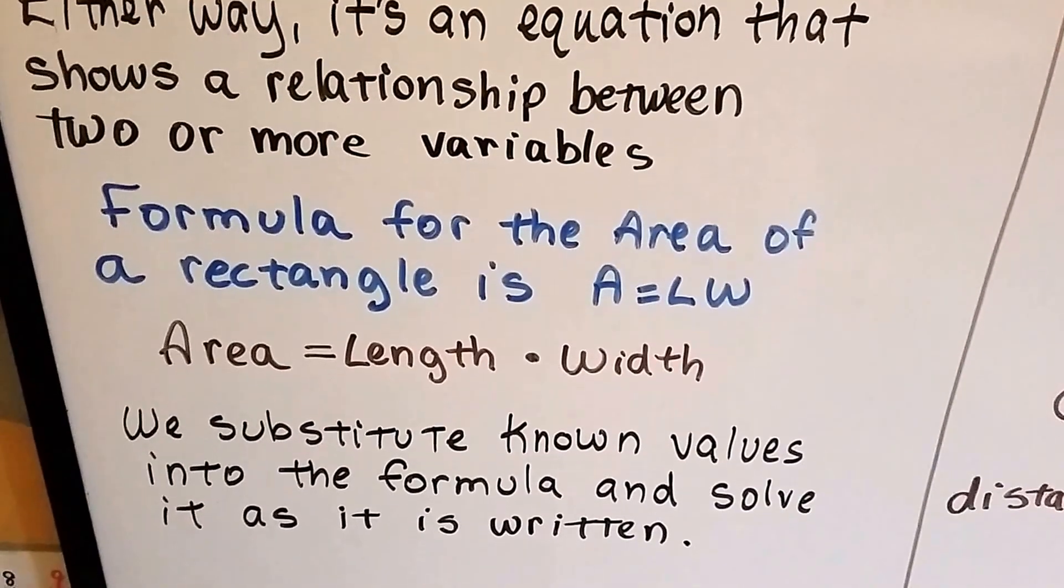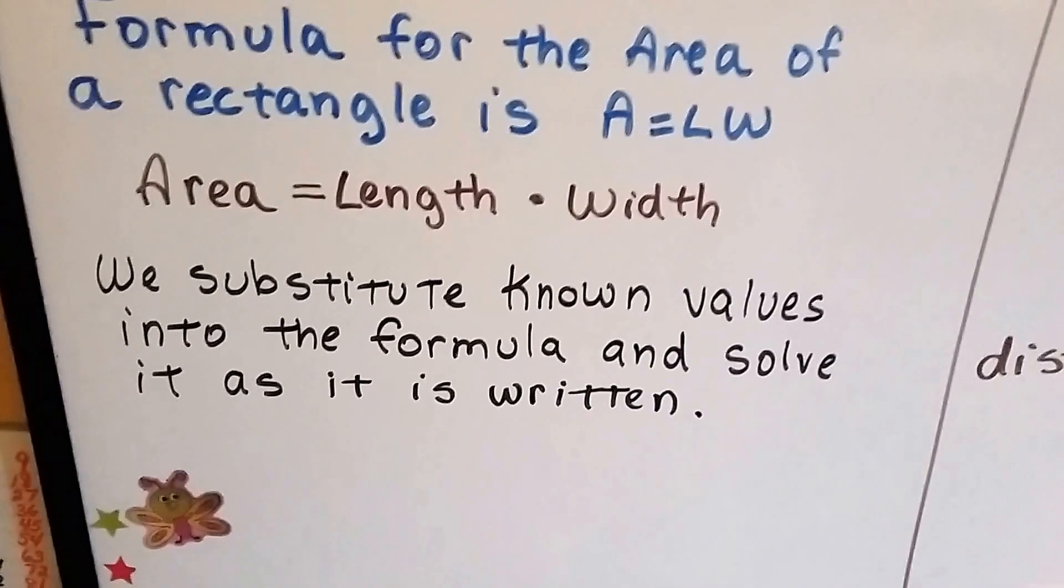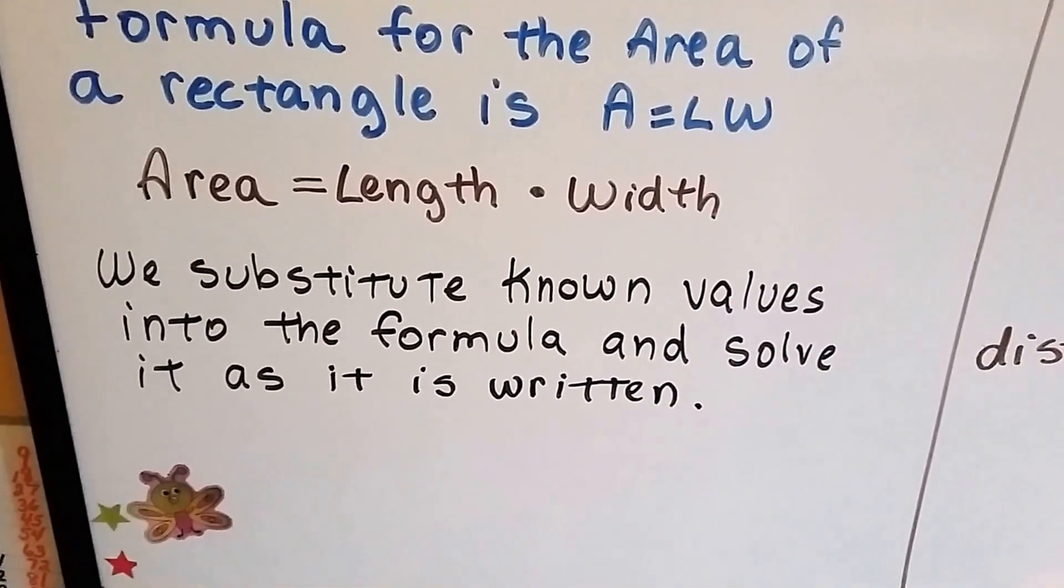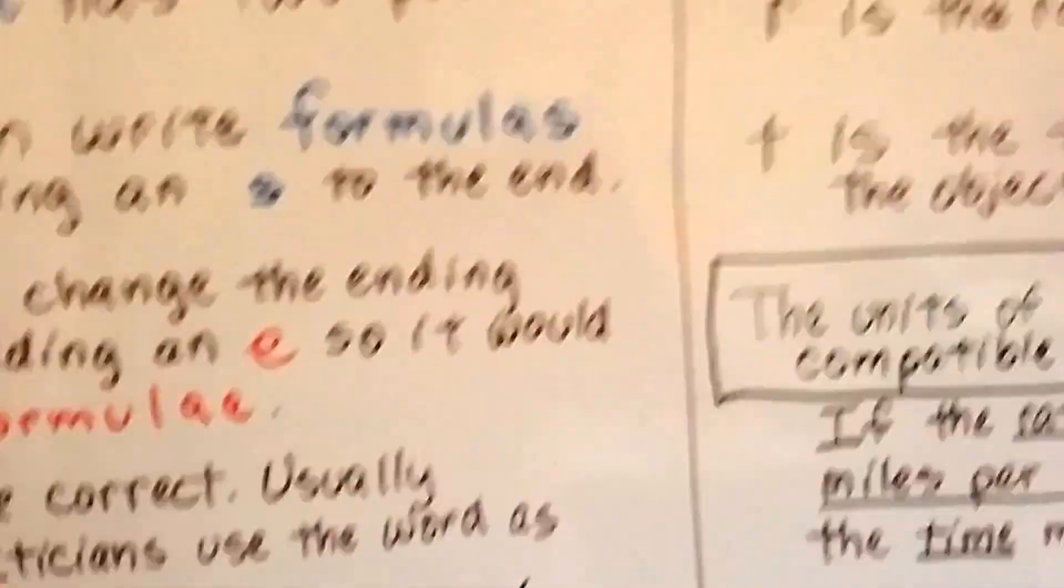A formula for the area of a rectangle is A equals LW. That's area equals length times width. We substitute the known values into the formula and solve it as it's written.